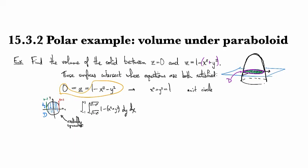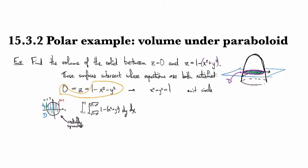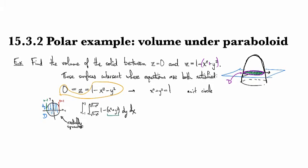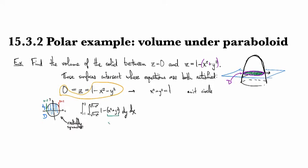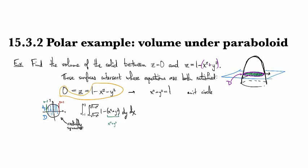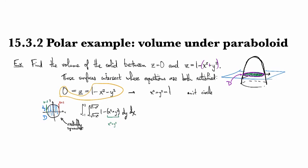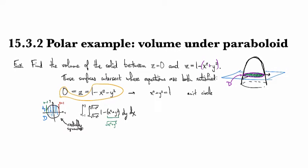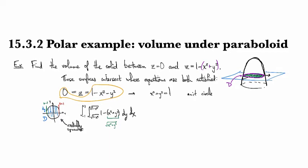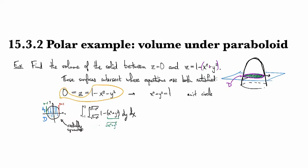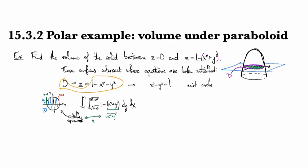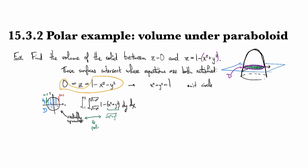And then the other thing that you notice is that the integrand itself is a function of x squared plus y squared, and whenever you see that a function only has x squared and y squared coming together in this form, that's telling you that the function itself is radially symmetric, and so both of these reasons right here are good hints that you probably want to switch into polar coordinates.